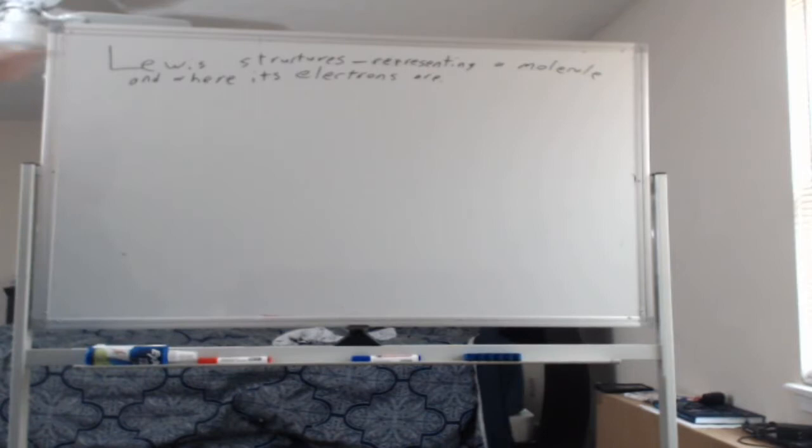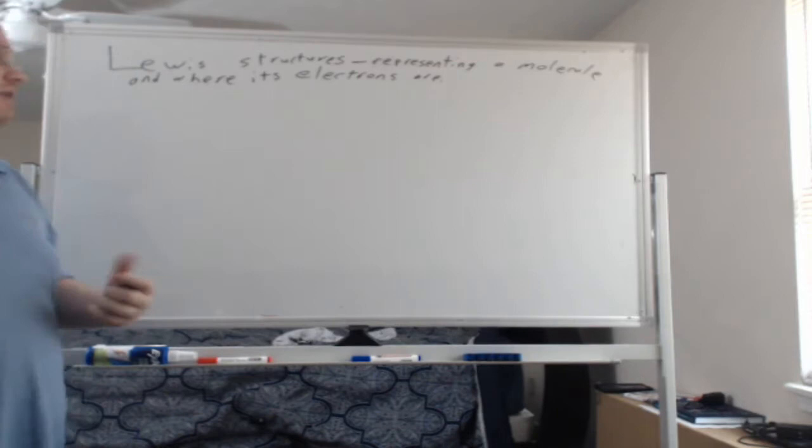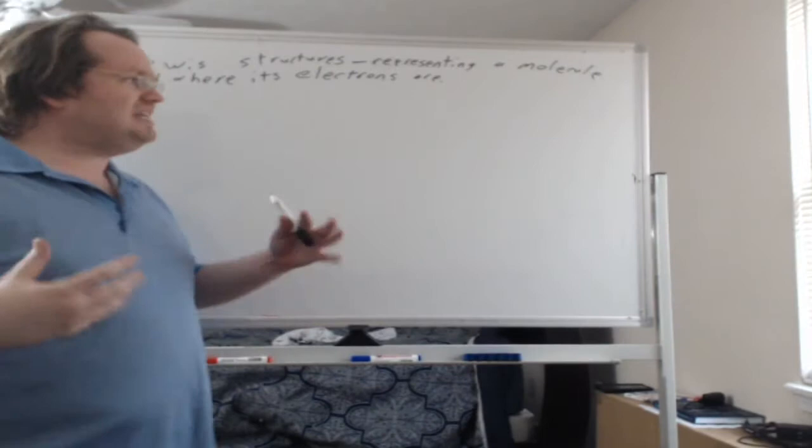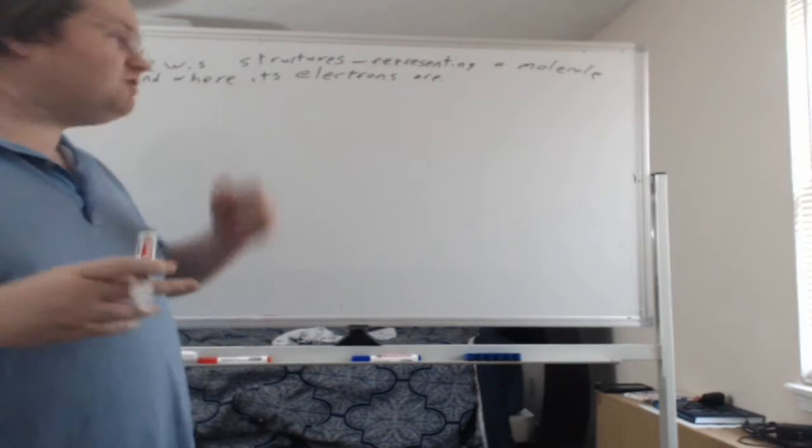After going over the structures themselves we're going to talk some about different exceptions that come up. We'll then go over structures that are called resonance structures where there are multiple possible answers and we need to decide which is the best answer among our possibilities and then we'll do a bit of practice.